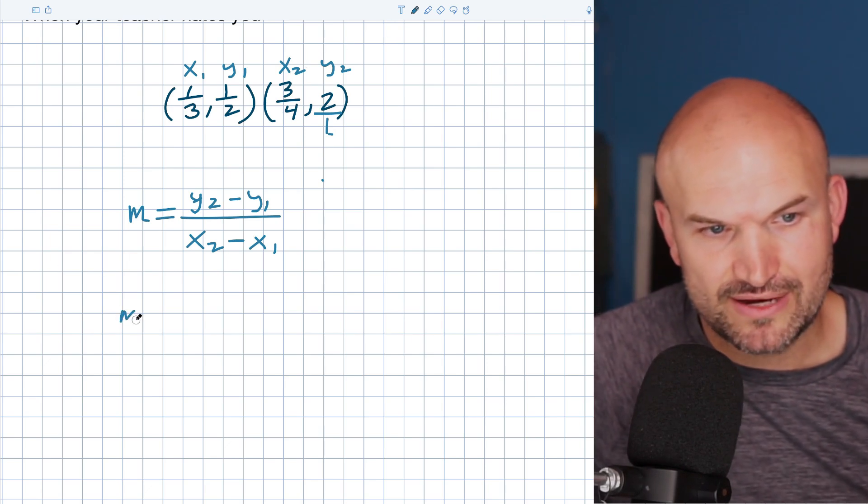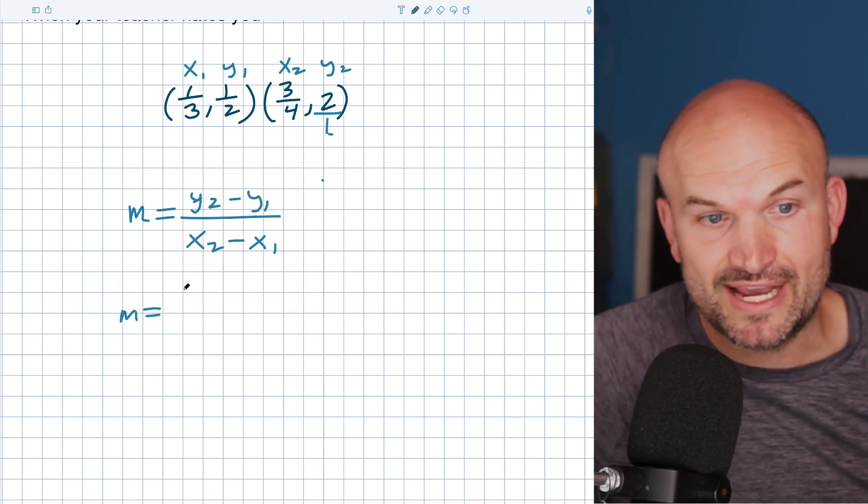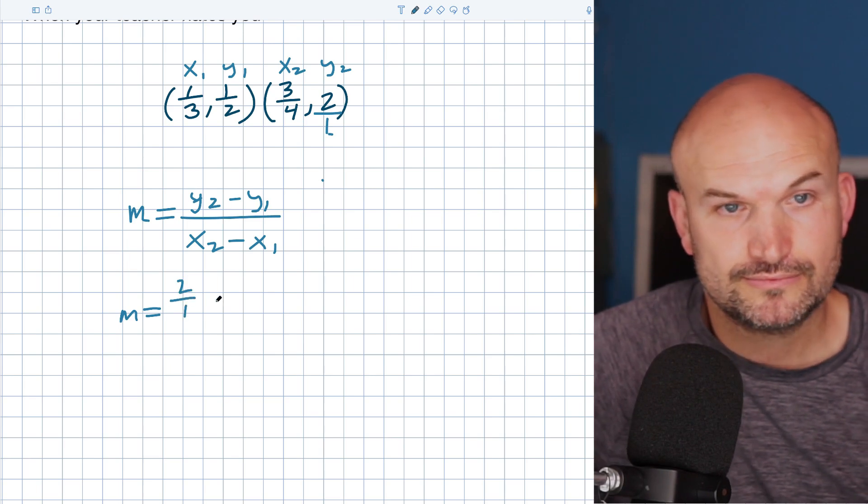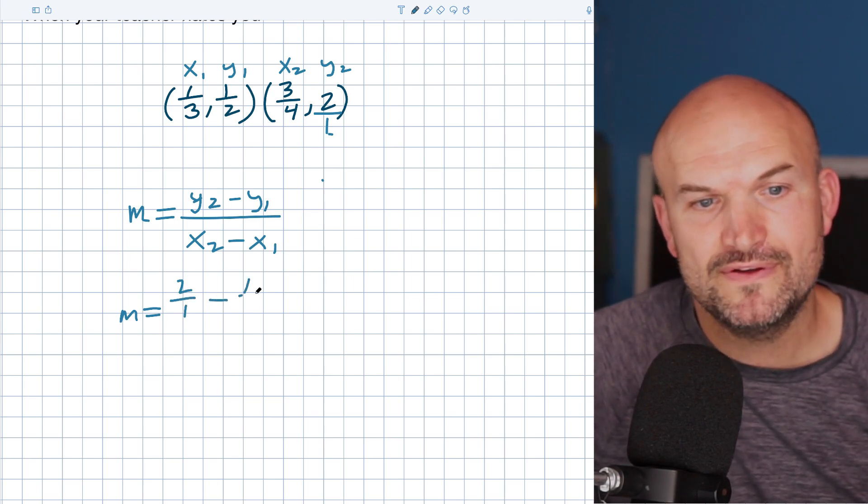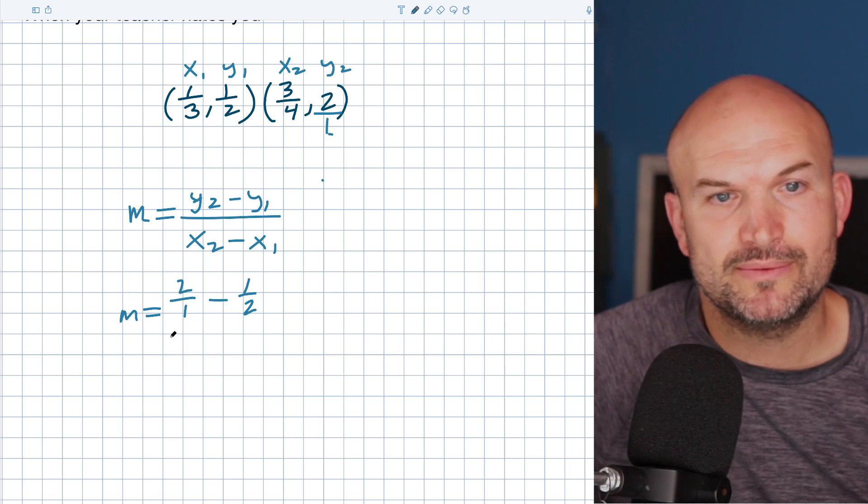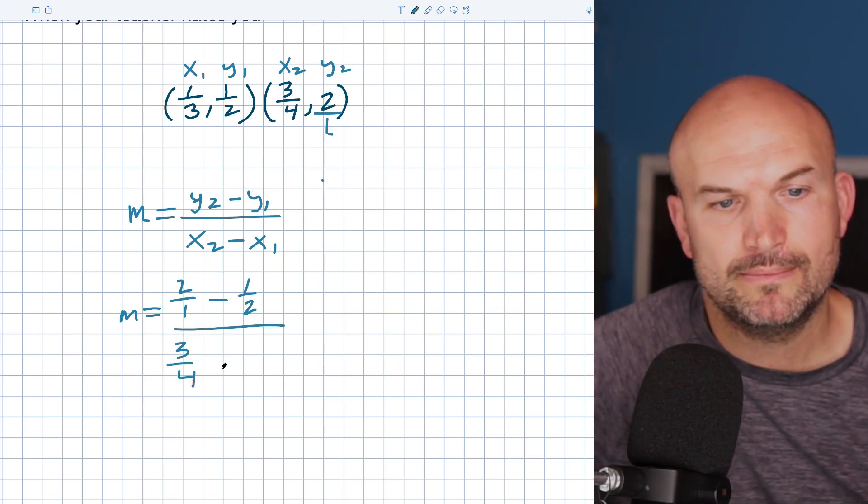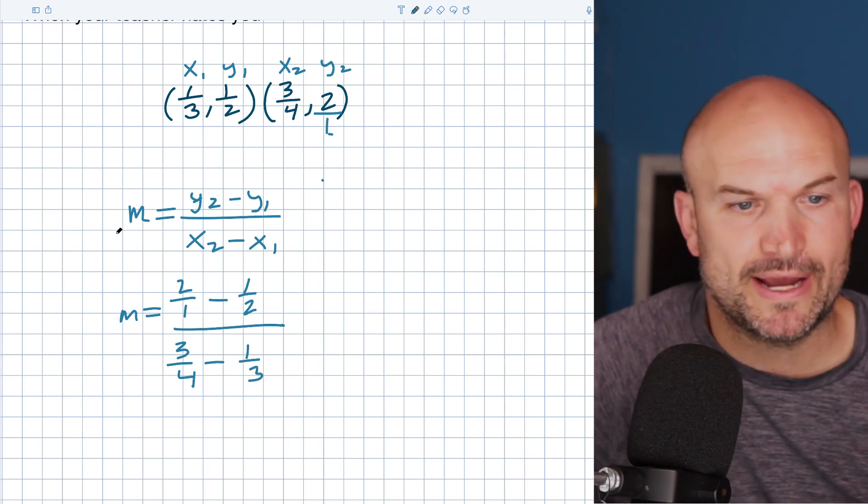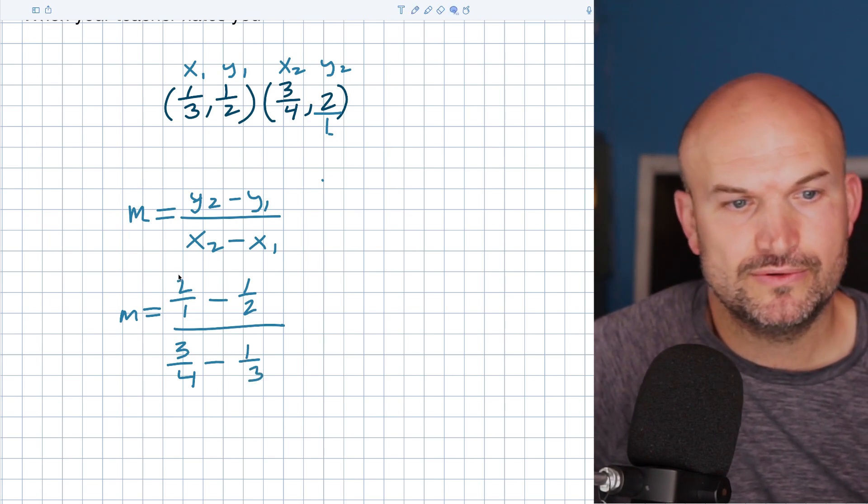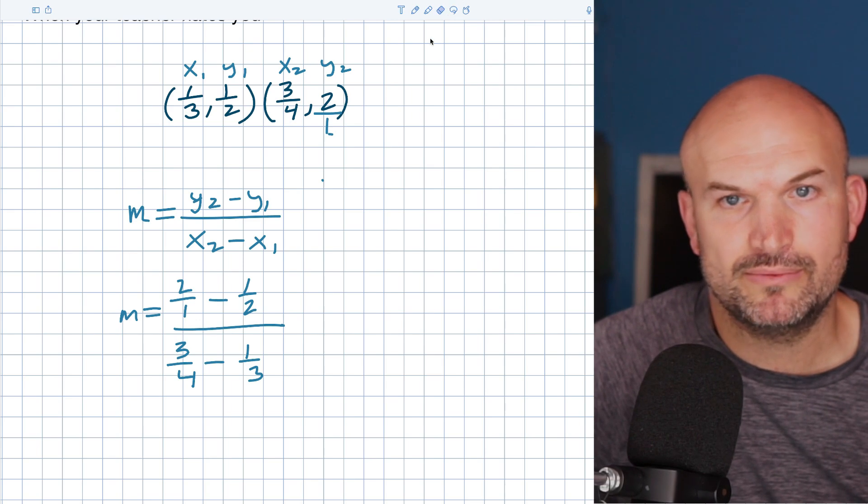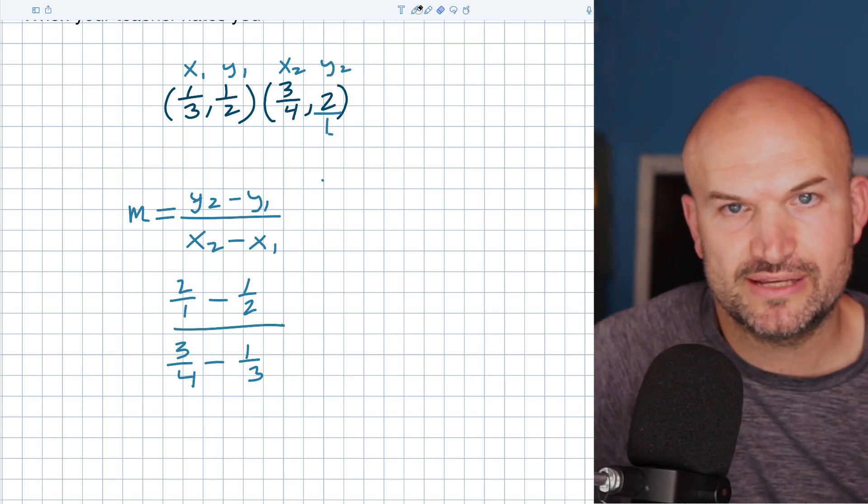So let's go ahead and figure this out. Now all we're going to do is plug this in. So I'll have a 2/1 minus a 1/2. And then over here, I'm going to do a 3/4 minus a 1/3. Okay. So I'm actually going to separate this a little bit, or I'm going to move this out a little bit just to give myself a little bit more room.